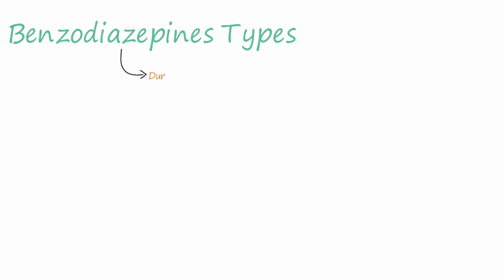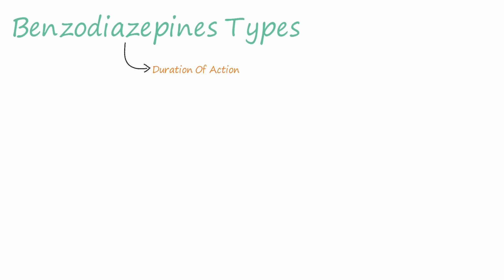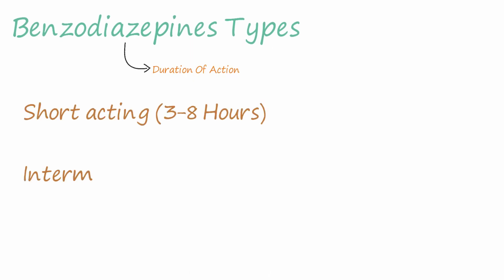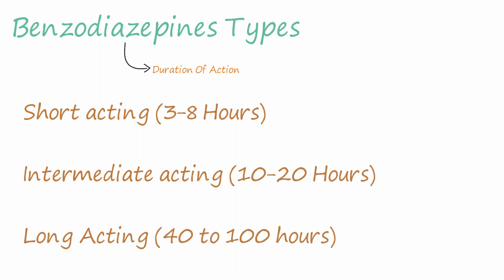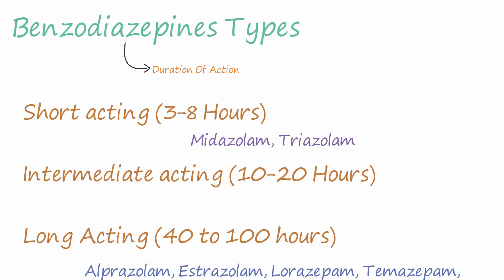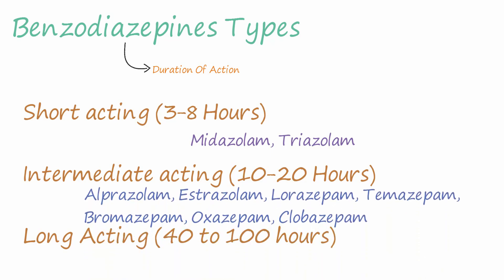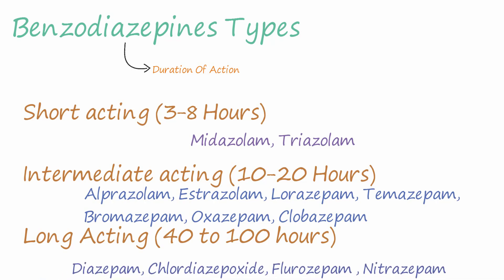Benzodiazepines are classified on the basis of duration of action into short-acting, intermediate-acting, and long-acting drugs. Short-acting drugs act for 3 to 8 hours and include midazolam and triazolam. Intermediate-acting drugs act for 10 to 20 hours and include alprazolam, estazolam, lorazepam, temazepam, bromazepam, oxazepam, and clobazepam.